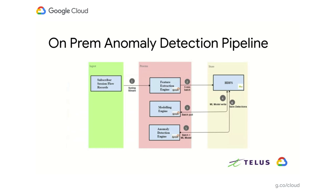This slide shows the end-to-end pipeline architecture for the anomaly detection engine at TELUS, divided into three swim lanes: ingest, processing, and storage using HDFS. Subscriber flow logs wrapped in a syslog stream are streamed to the Hadoop cluster, where the feature extraction engine uses Spark Streaming to pick up the data. It uses a fixed five-minute window to create mini-batches, then performs feature extraction, feature enrichment, and aggregation, and that processed batch is written to HDFS for storage.